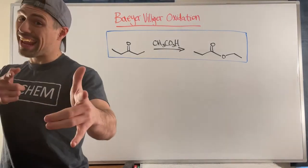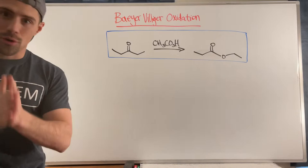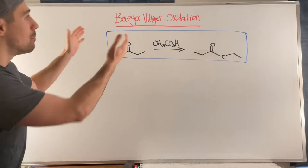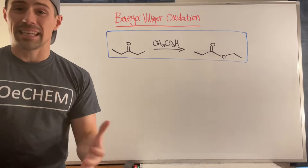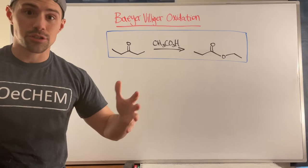Hey gang, welcome back for another video here on JoChem. In this video we're getting all up in talking about the Baeyer-Villiger oxidation. If we look at this example right here, we're going to go through the mechanism and then after we show how this mechanistically occurs, I want to go through some examples. I want to talk about everything you'll need to know to mechanistically handle this reaction as well as predicting the products.